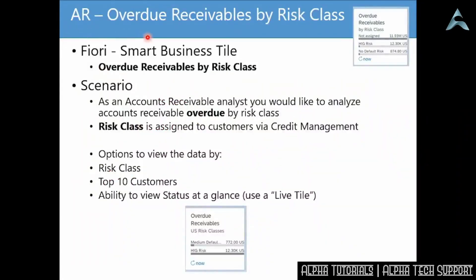In this lesson, we have an additional tool for analyzing overdue receivables: Overdue Receivables by Risk Class. When you're an AR analyst focusing on risk class, bear in mind that a risk class is assigned to customers via the credit management side of SAP. Customers are assigned a risk class — high risk, medium risk, or low risk — via the credit management functionality. This tile allows you to carve up your overdue AR by risk class, analyze by risk class, and look at top 10 customers by risk class. You can also save a personalized live tile — for example, personalized to show U.S. company codes only with high-risk customers at 12,000 and medium customers at 700,000.